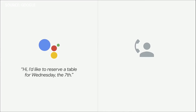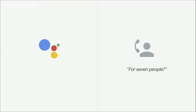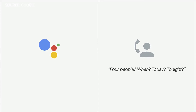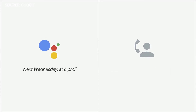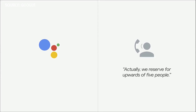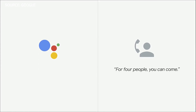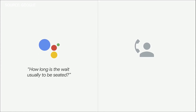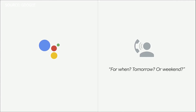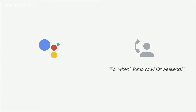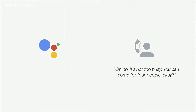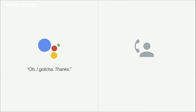Hi, I'd like to reserve a table for Wednesday the 7th. For seven people? It's for four people. For people — when? Next Wednesday at 6 PM. Actually, we leave here for like after five people. For four people, you can come. How long is the wait usually to be seated? For when — tomorrow or weekday? For next Wednesday, the 7th. Oh, no, it's not too busy. You can count on four people, OK? Oh, I got you. Thanks. Bye bye.